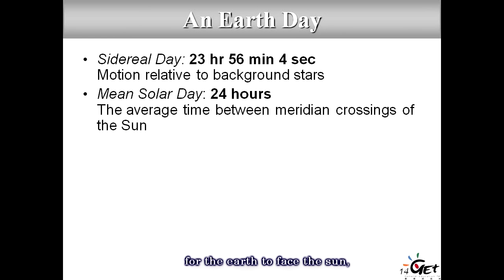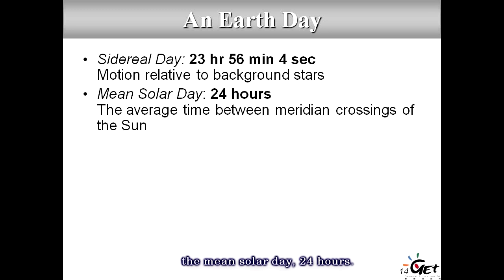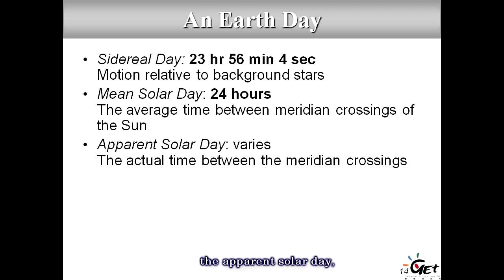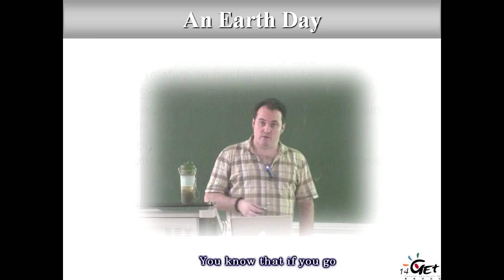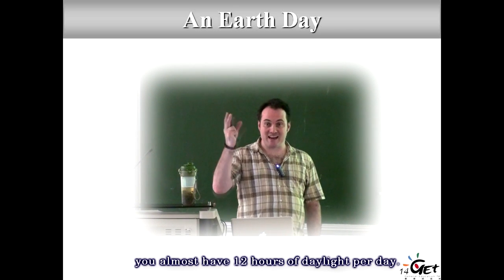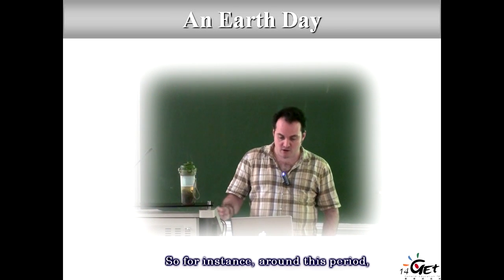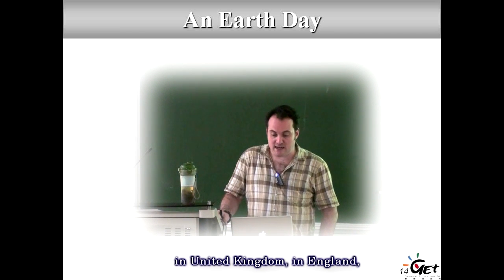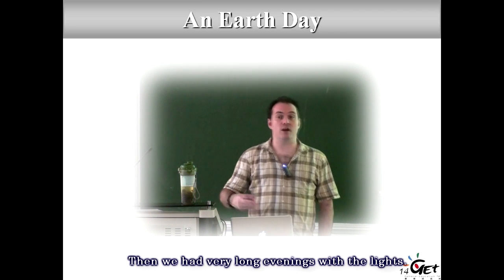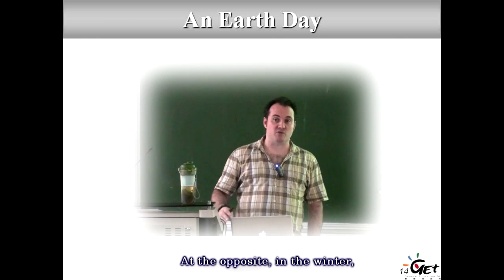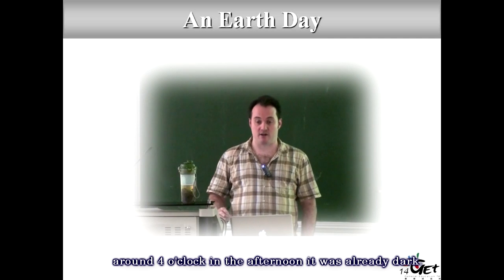Don't confuse this with the apparent solar day, which depends on where you are on Earth. Toward the equator you have nearly equal hours of daylight; going further north, you have less and less. For instance, when I lived in England, around June 21st you can have daylight until about 10 o'clock at night. In winter, by 3 or 4 in the afternoon it was already dark.